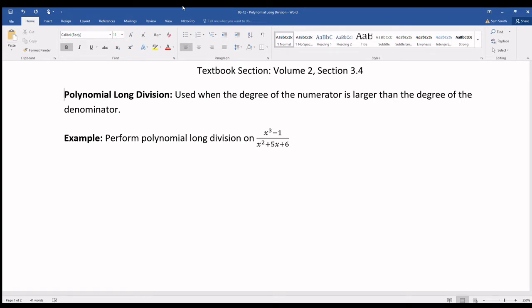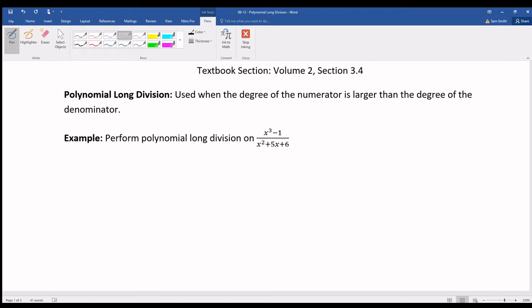So what do we do if we have the case of a polynomial rational expression like this one where the polynomial in the numerator has degree 3, and that's larger than the polynomial in the denominator which has degree 2?